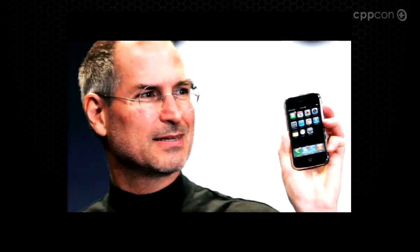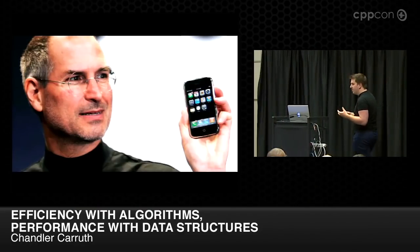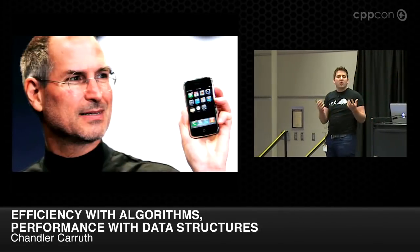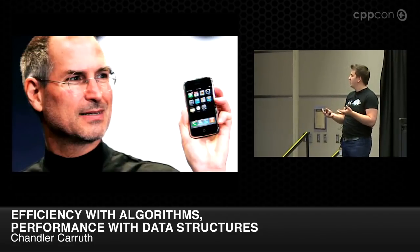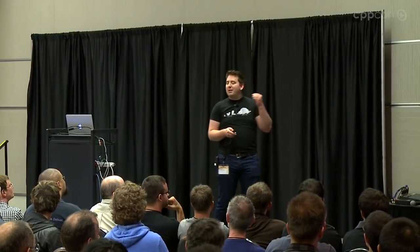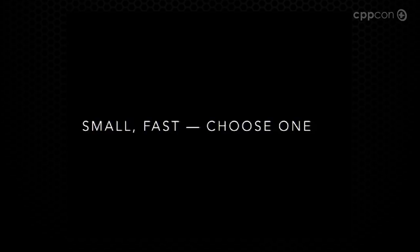When Steve Jobs introduced the iPhone, he was changing how we think about computing. Mobile was now a first-class compute citizen — it took the world a little while to even realize that's what had happened. We now have to care about mobile, about things that are small and really hard to fit big bulky systems into. We essentially get into this annoying situation of: we have small machines, we have fast machines, and we have to choose one. We're going to choose small almost every time.